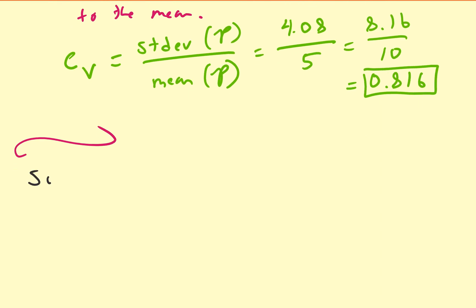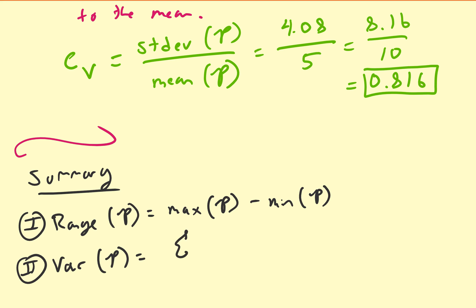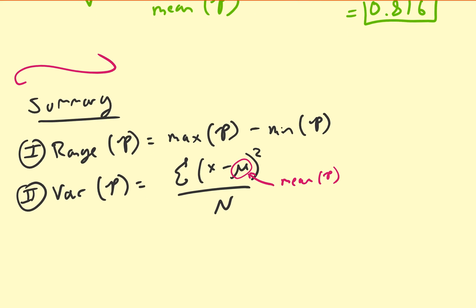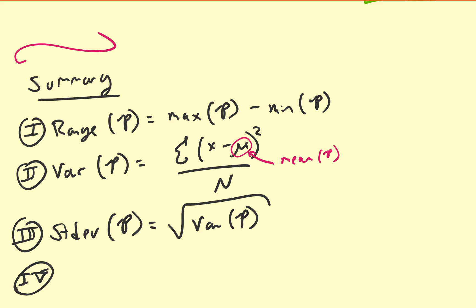Let me summarize the formulas. First, the range of a population equals the max minus the minimum. Second, the variance of a population equals the sum of squared distances divided by the population size, where mu is the population mean. Third, the standard deviation equals the square root of the variance. Fourth, the coefficient of variation equals the standard deviation divided by the population mean.